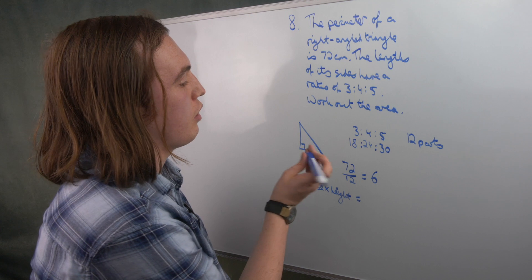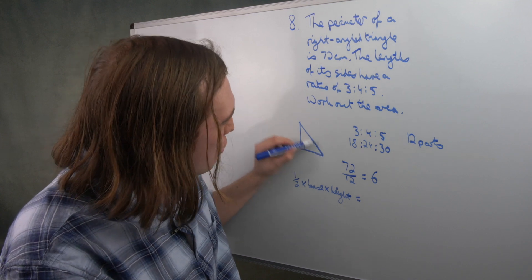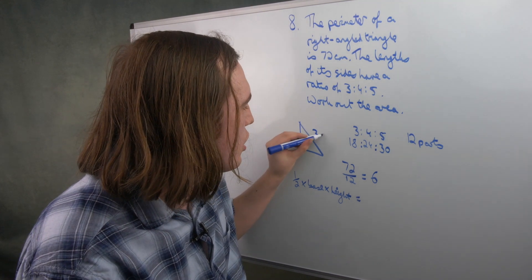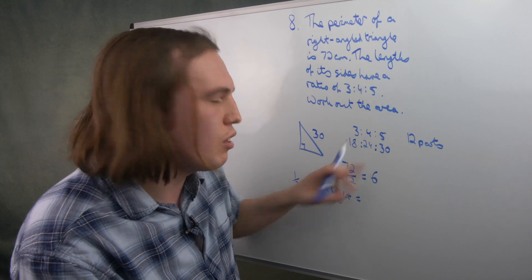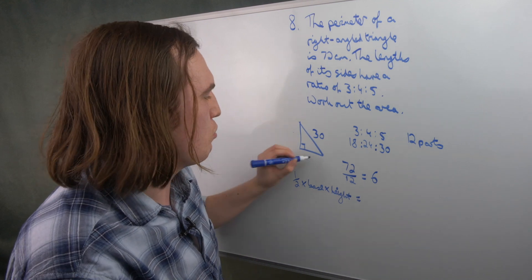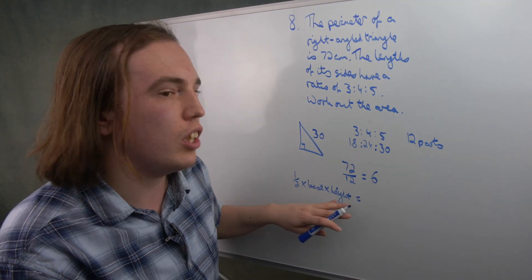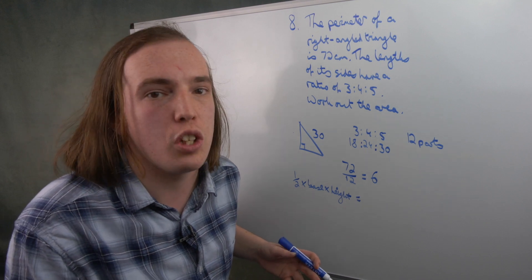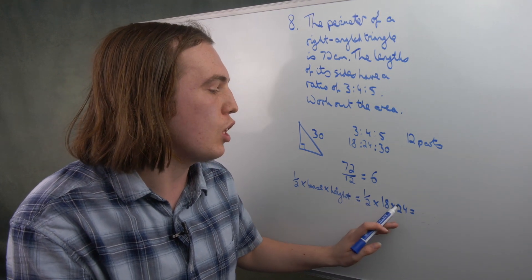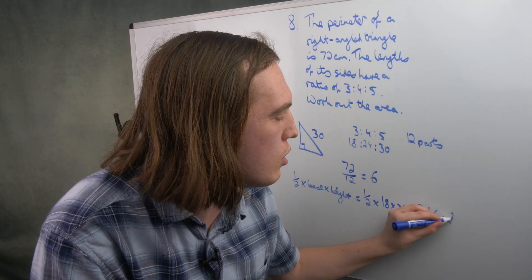We know those are the three side lengths, but which ones are they? In a right-angled triangle, the hypotenuse opposite the right angle has to be the longest side, so we label it 30. The 18 and 24 can go either way around on the other two sides. To work out the area: half times base times height. The base and height are the two shorter sides, so it doesn't matter which is which. Half times 18 times 24 gives 216 centimetres squared.